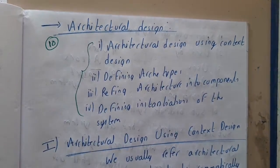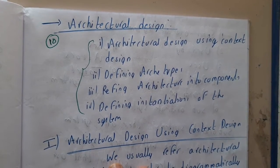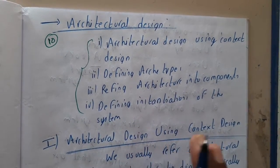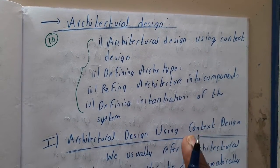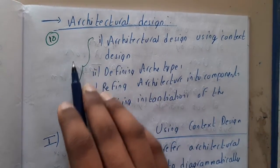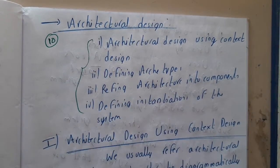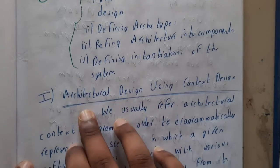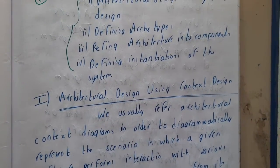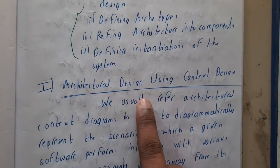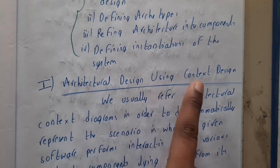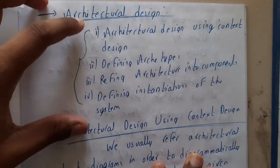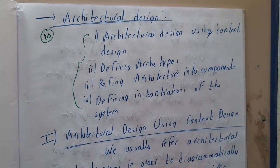In this we will be seeing some real-time examples. In our first topic we'll be discussing a sensor example, and we'll be using the sensor example across all four diagrams so you'll have a clear idea. The first type we will be going through in this lecture is architectural design using a context diagram.